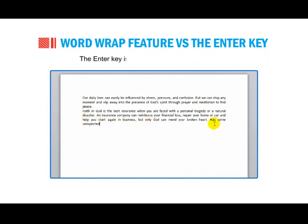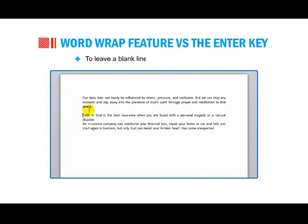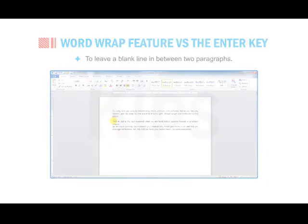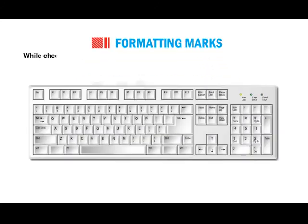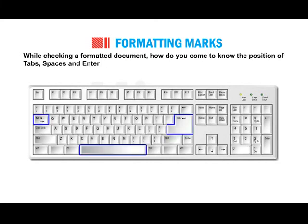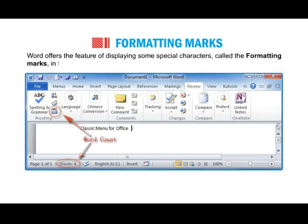The Enter key is used only in the following cases: to place text in a new line, to mark the end of a paragraph, or to leave a blank line between two paragraphs. While checking a formatted document, how do you know the position of tabs, spaces and Enter keys? Word offers the feature of displaying some special characters called formatting marks when the corresponding keys are pressed.